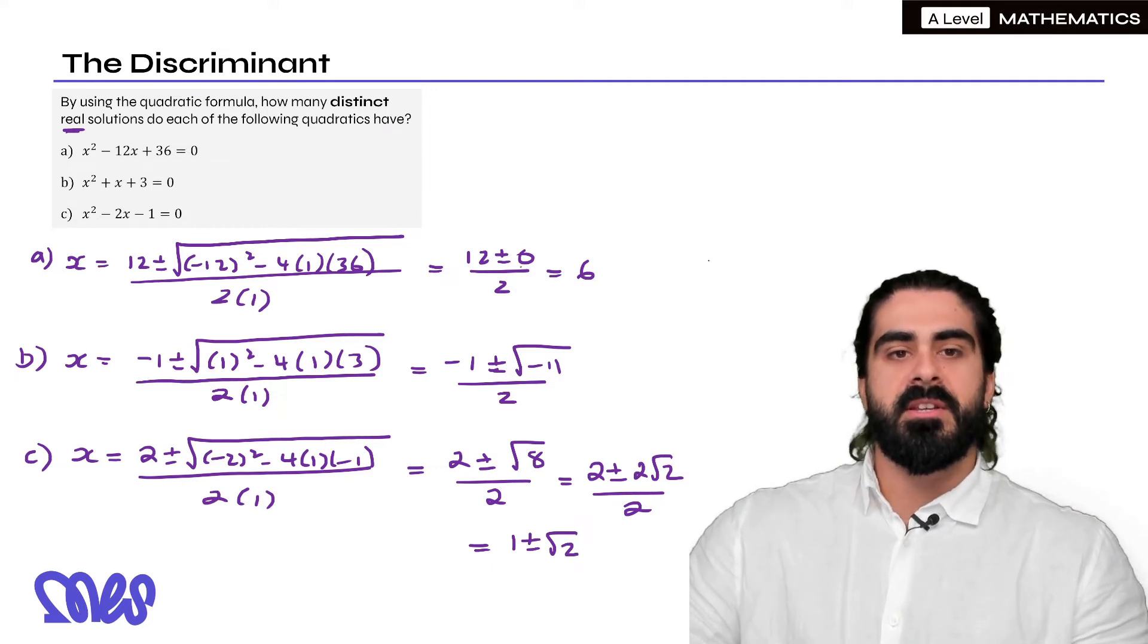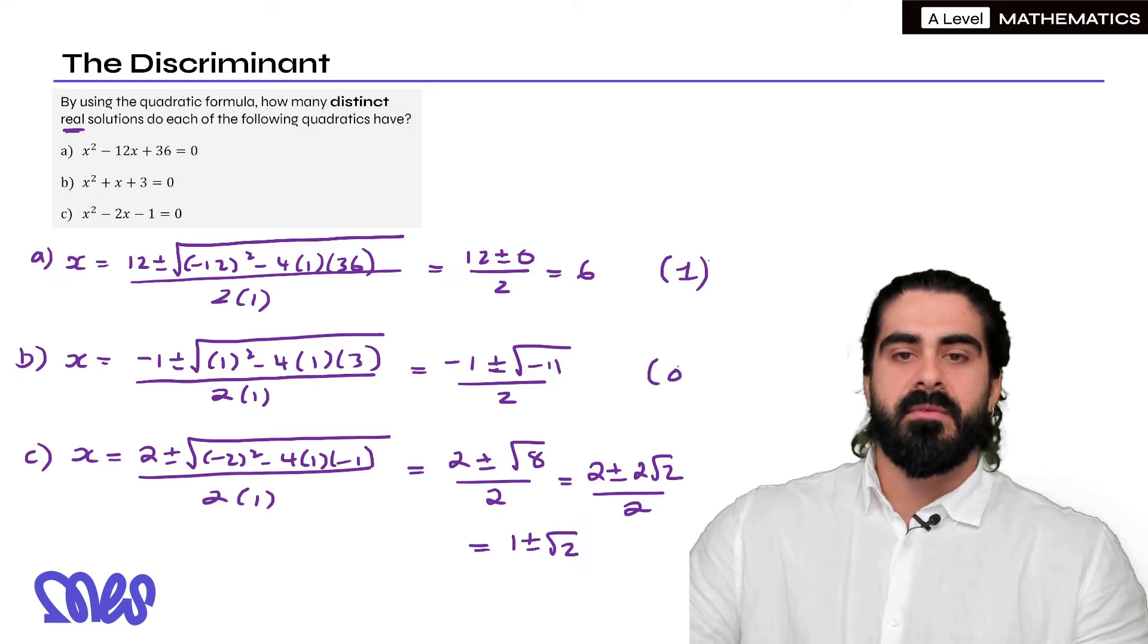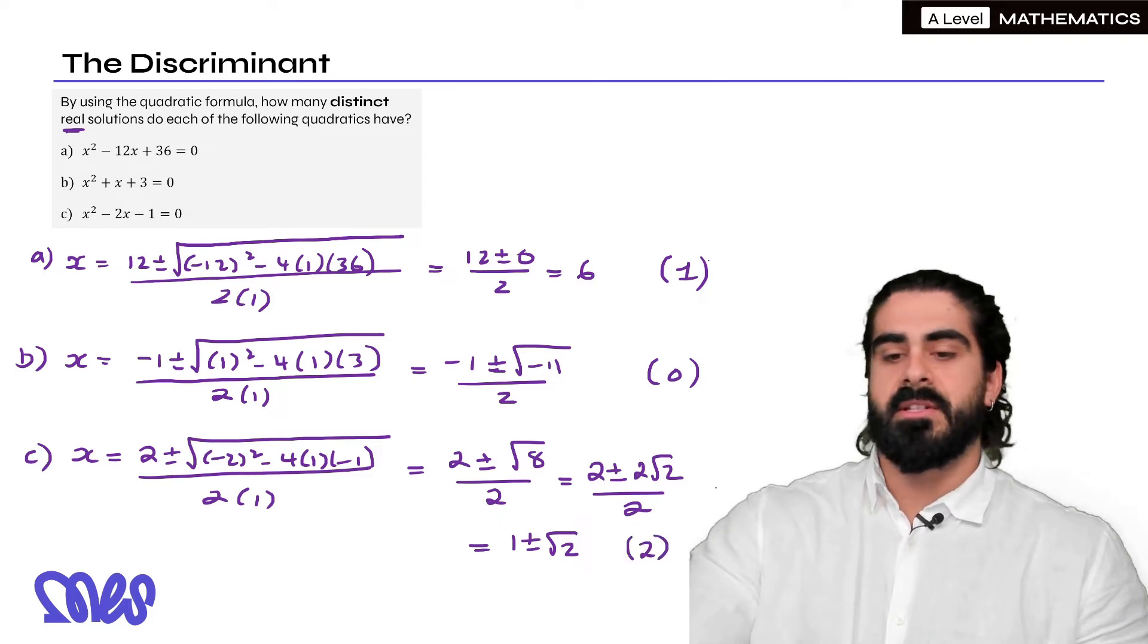So for part a we can see when what's inside the square root is zero we have one distinct. When what's inside the square is negative we have zero real solutions and then what's inside the square root is a positive number we have two distinct real solutions.